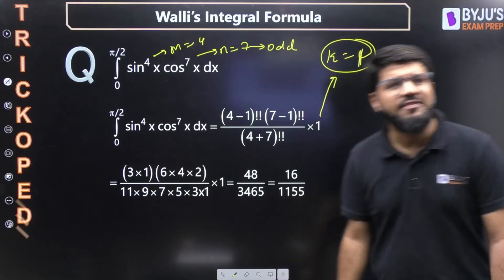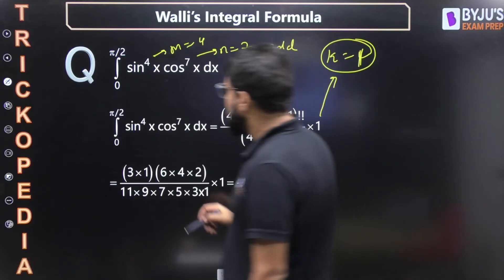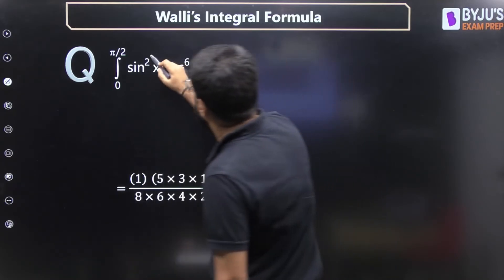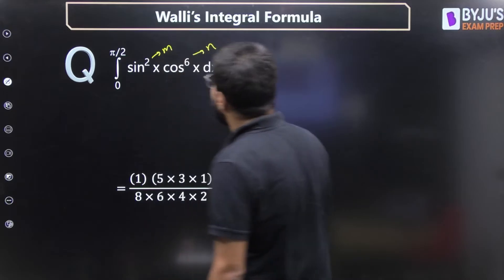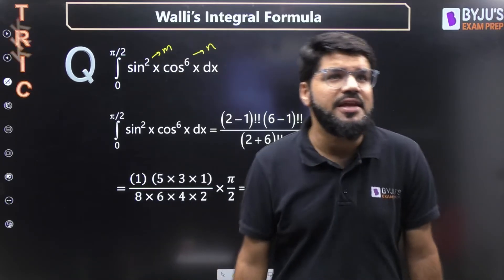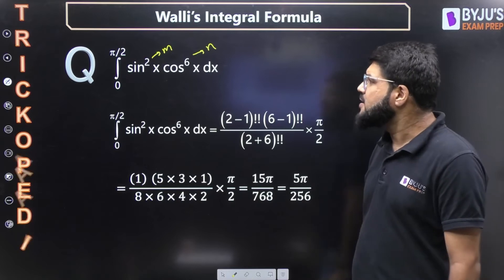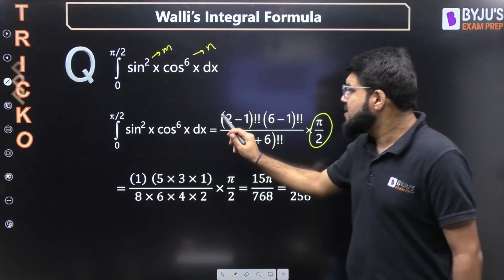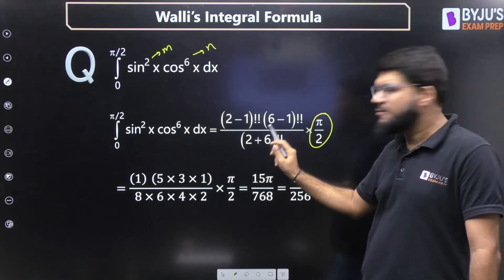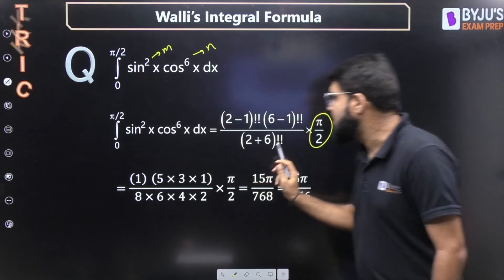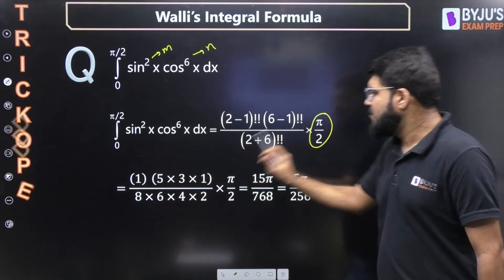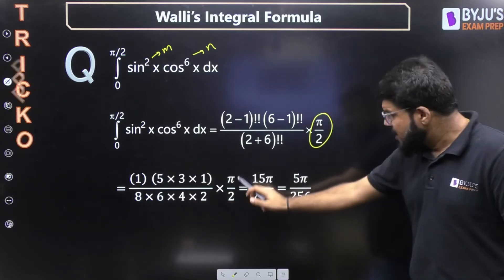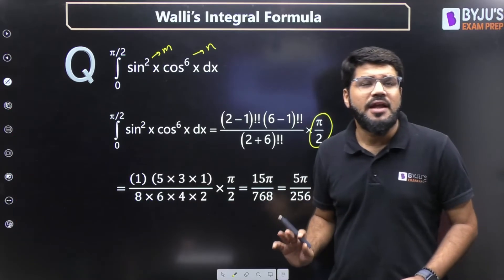Let's try one more: integral from 0 to π/2 of sin²(x) cos⁶(x) dx. Here m = 2 and n = 6 — both are even, so k = π/2. Applying the formula: (2−1)!! × (6−1)!! / (2+6)!! × π/2 = 1!! × 5!! / 8!! × π/2. Here 1!! = 1, 5!! = 5×3×1, and 8!! = 8×6×4×2. Solving gives the final answer.